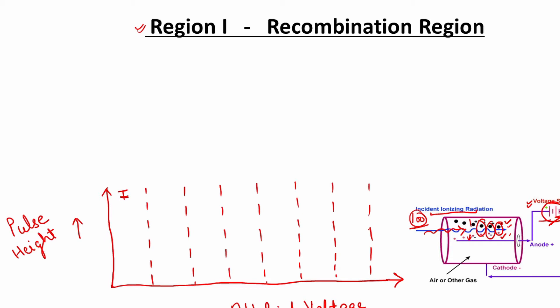As the applied voltage is increased, recombination decreases. For example, when voltage is low, all 100 electrons recombine; as voltage increases, first 10 electrons reach the anode, then 50, then 90. So in the recombination region, as the applied voltage increases, recombination decreases and the pulse height increases. If we draw this, as applied voltage is increased, the pulse height also increases.